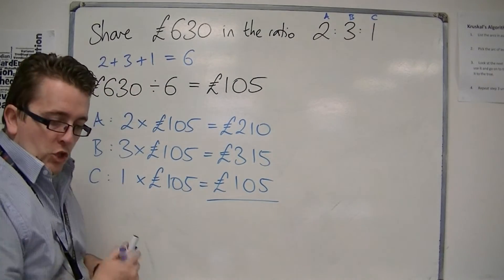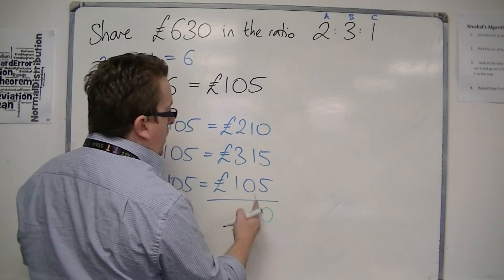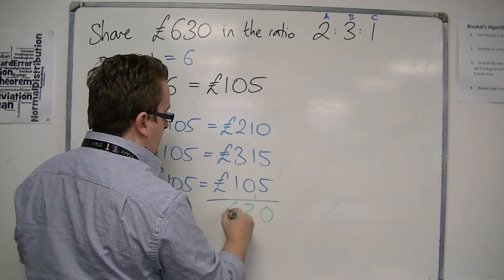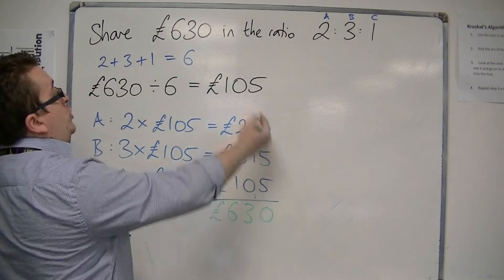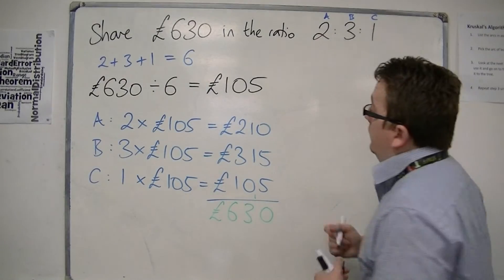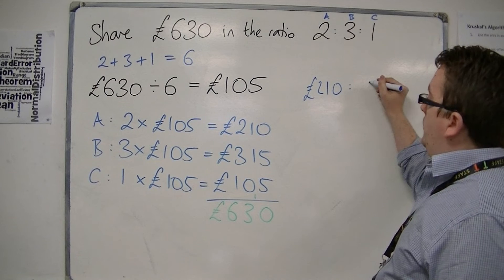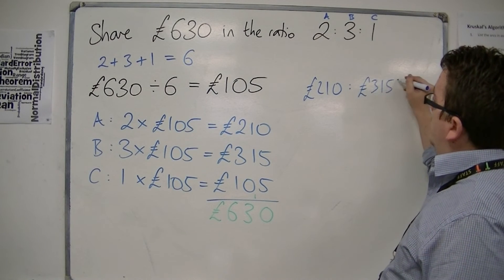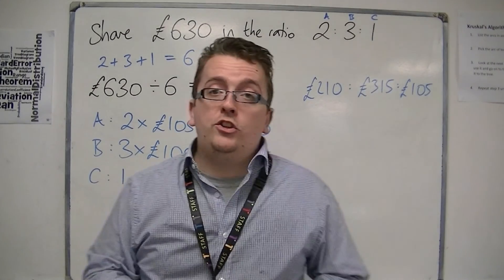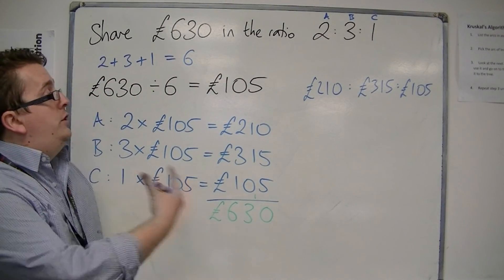If we check, all three amounts add up to the original £630. So the amount has been split up: person A gets £210, person B gets £315, and person C gets £105. And that's how we can share money or another commodity out into a given ratio.